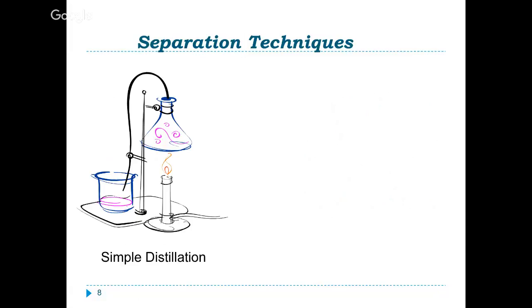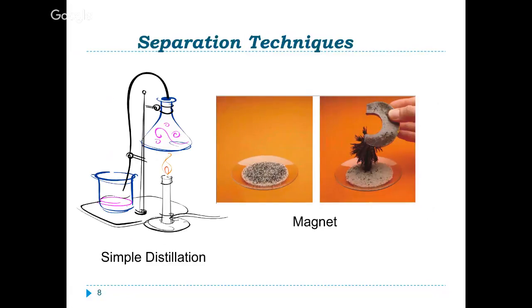So separation techniques are looking at ways that we can separate mixtures back into pure substances. One way to do this is a distillation. Distillation means that you're going to separate two liquids, two or more liquids, based on their boiling points. So the substance with the lowest boiling point is going to evaporate off first and you would collect it. And you can keep going through this process until you have all of your different liquids. With our sand and iron mixture, we can use a magnet because we look at the physical property of iron being magnetic and sand not being magnetic. So we can pull out all the iron filings and then we would have iron, which is an element, and then we would have our sand, which is a compound.